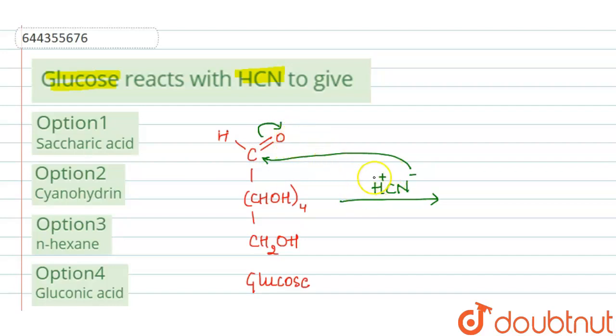So the product which will be formed will be CH(OH)(CN), (CHOH)₄, CH₂OH.